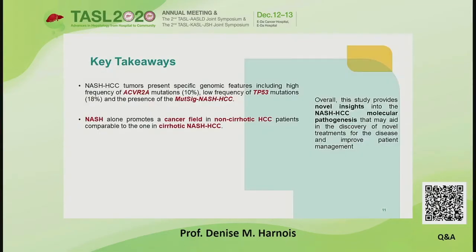The key takeaways from this abstract were that NASH-associated hepatocellular tumors presented with specific genomic features including high frequency of ACVR2A mutations, a low frequency of TP53 mutations, and the presence of a novel mutation signature NASH HCC. NASH alone promoted a cancer field in non-cirrhotic HCC patients compared to those with cirrhotic NASH HCC association. Overall, this study provides novel insights into the NASH HCC molecular pathogenesis that may aid in the discovery of novel treatments for the disease and improve future patient management.